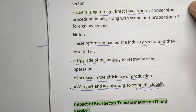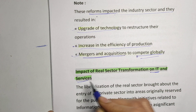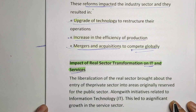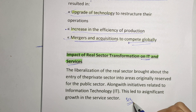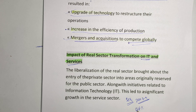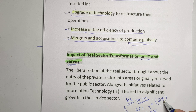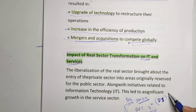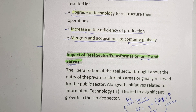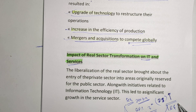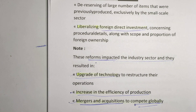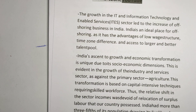Now let's see the impact of real sector transformation on IT and services. As studied in the previous chapter, the services sector contributes almost 64 percent of GDP according to 2008-09 data, and is called the tertiary sector. Initially, the IT industry in India was not in a boom phase, but after the reforms the IT sector grew tremendously. The major contributions in the service sector are mainly IT, banking, and insurance.